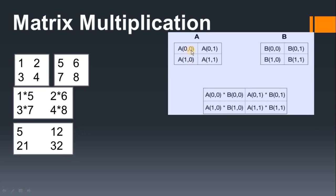The first row first value is at index position zero-zero — index positions start from zero. The next value in the same row is at index zero-one. The column value increases while the row value stays the same because we are still in the first row. When you go to the second row, the row value changes from zero to one, starting at column zero, so it is index one-zero, and the second column is one-one.